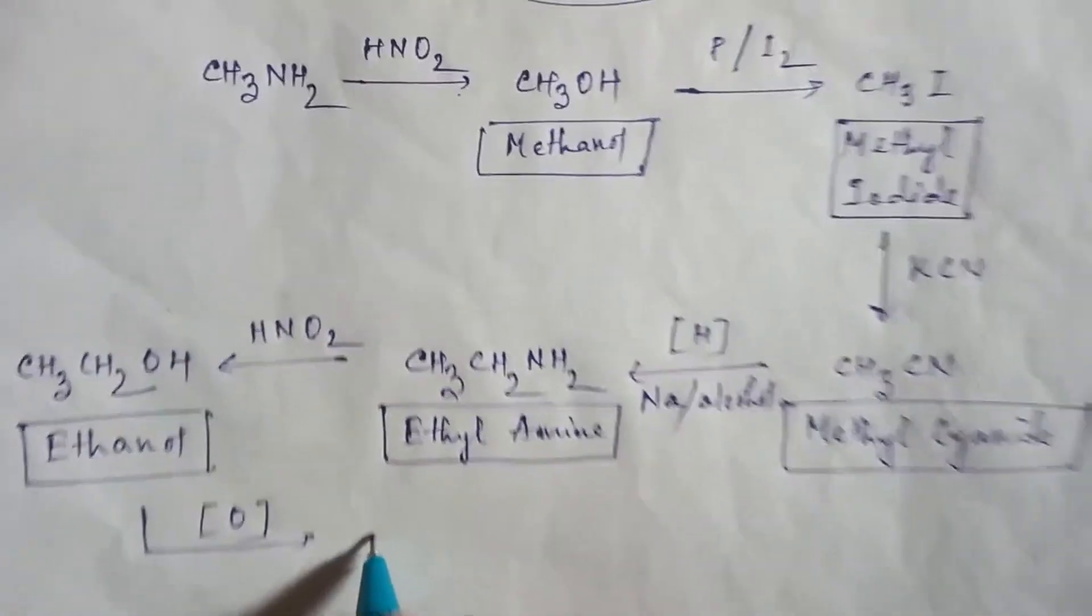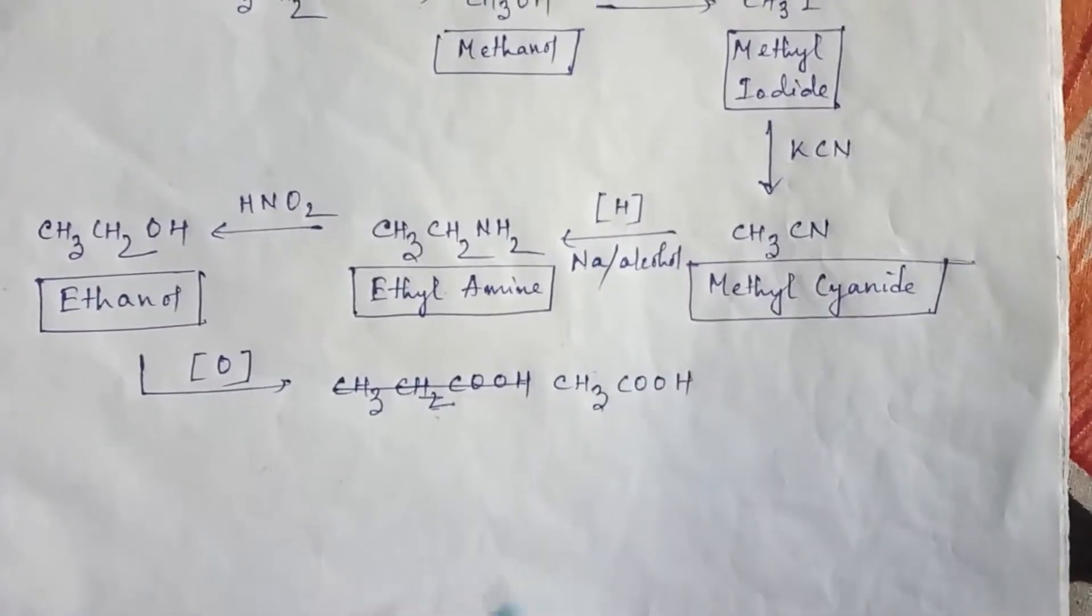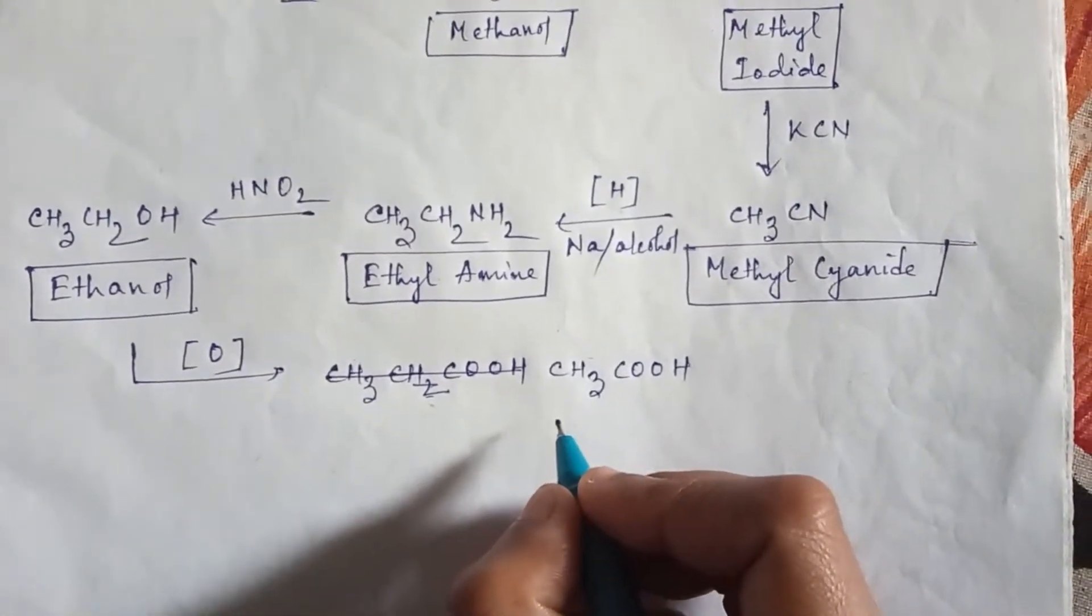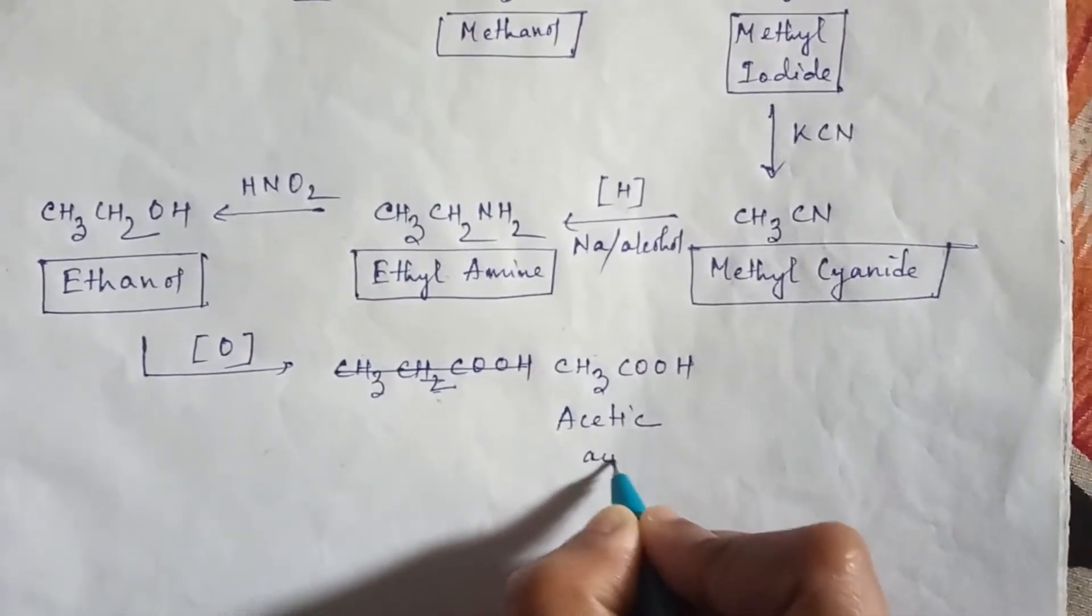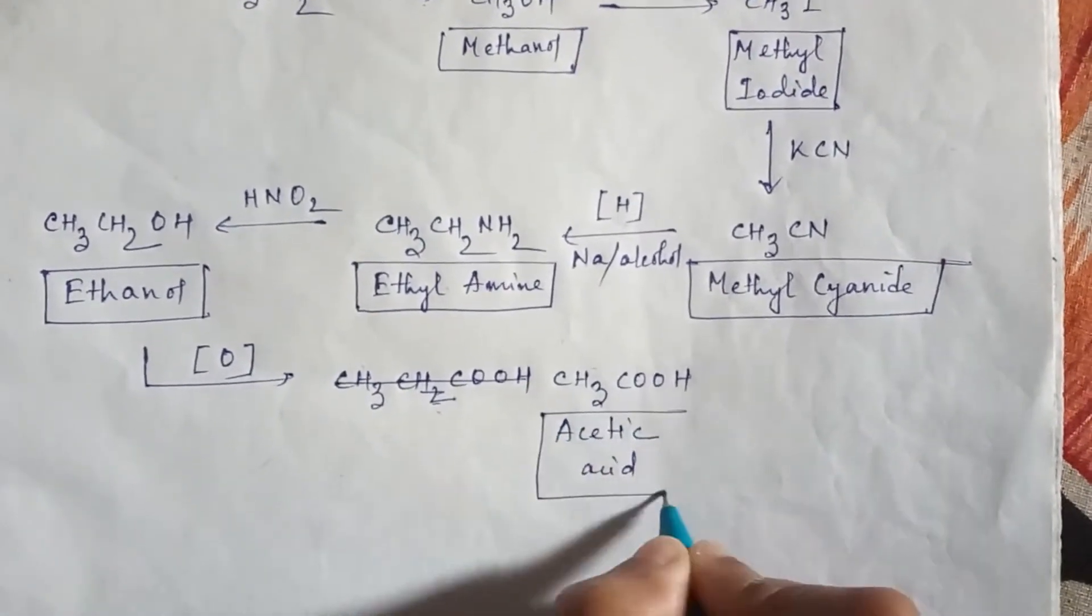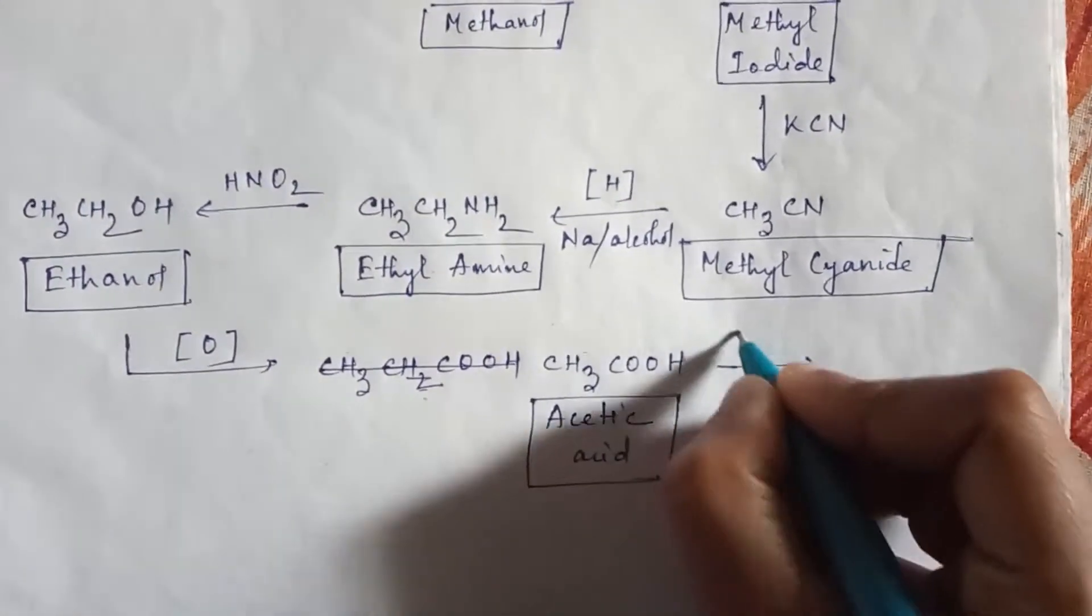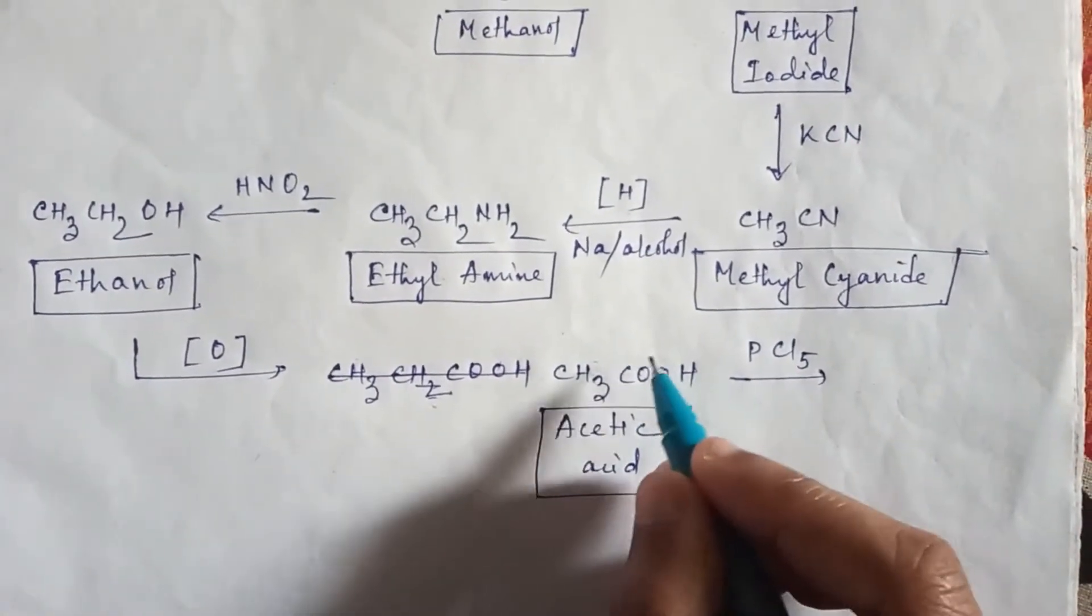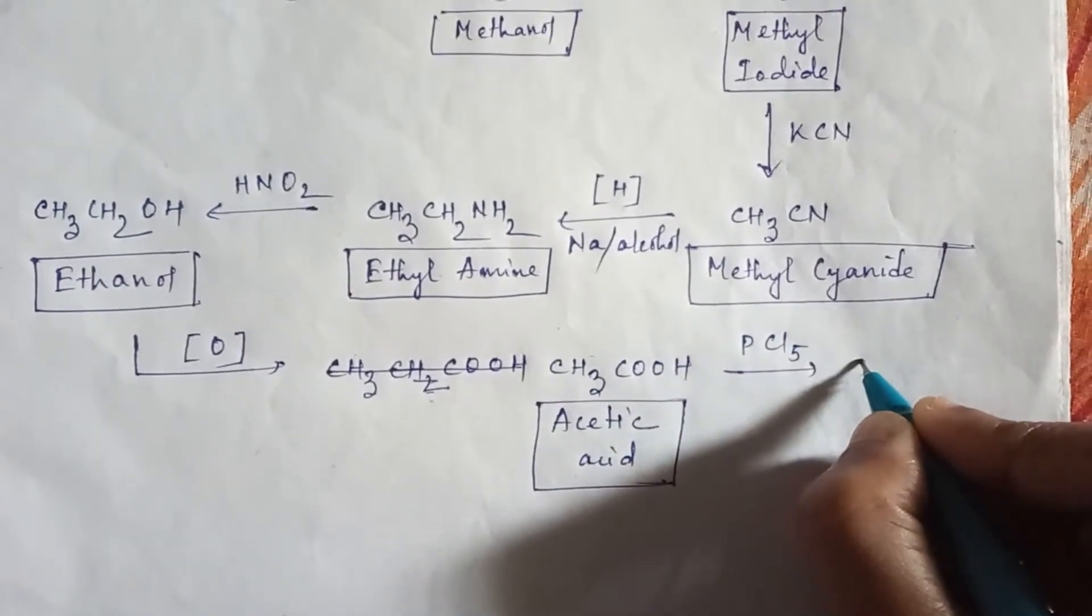The product will be acetic acid or we can say ethanoic acid. Then if you use PCl5, phosphorus pentachloride here, then chlorine will introduce here and the compound will be acetyl chloride.